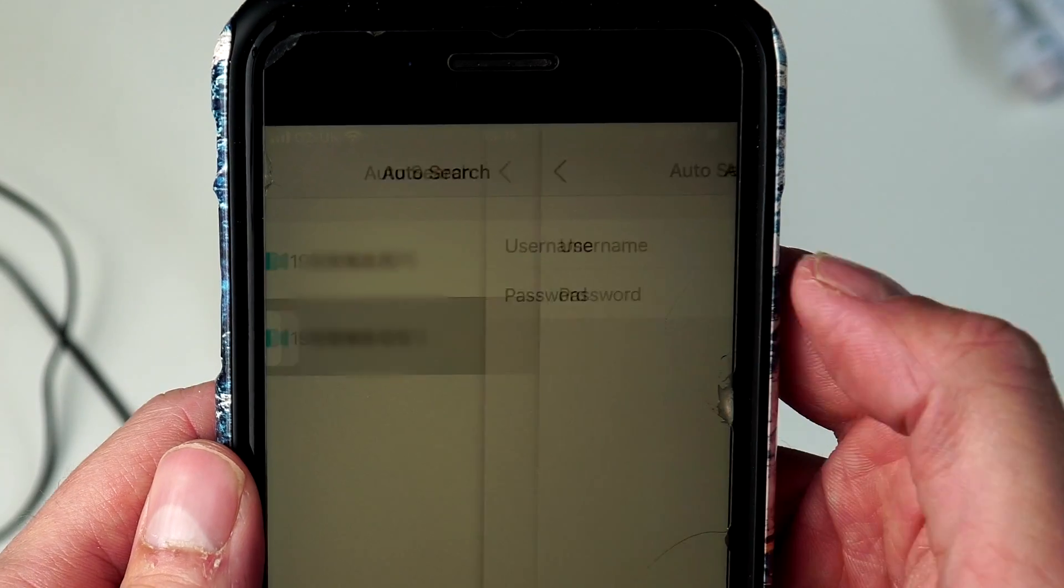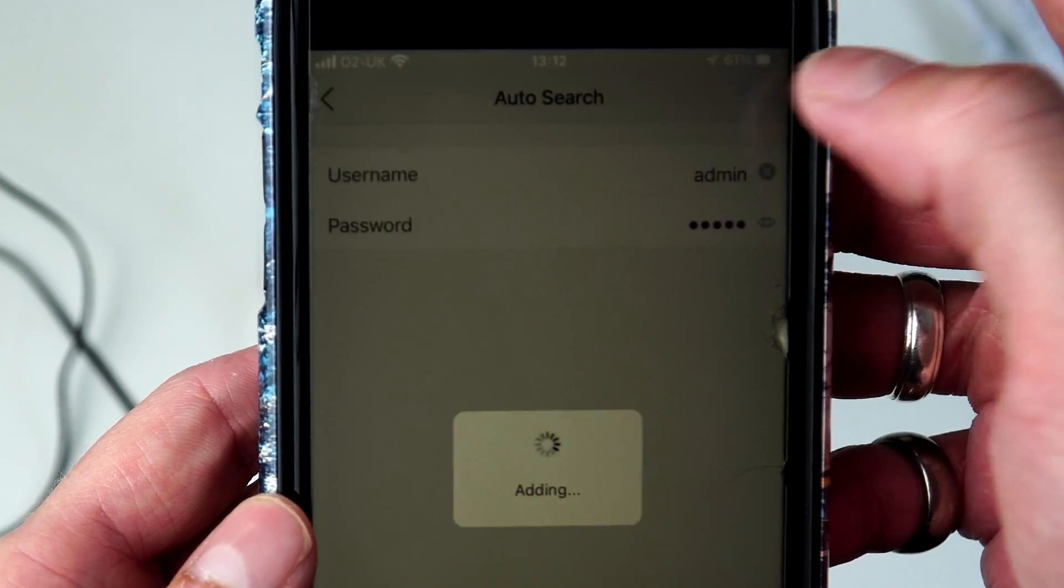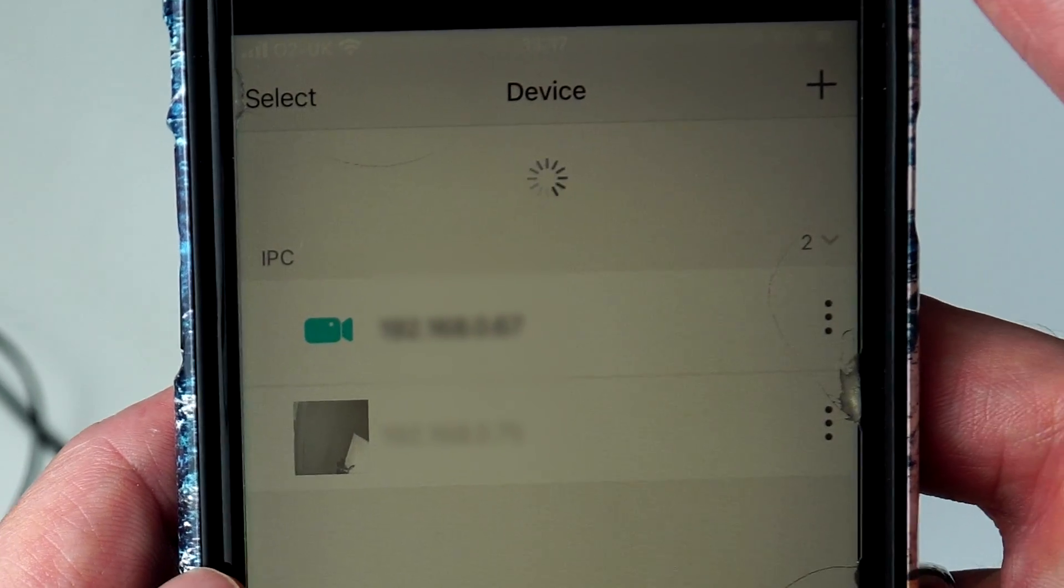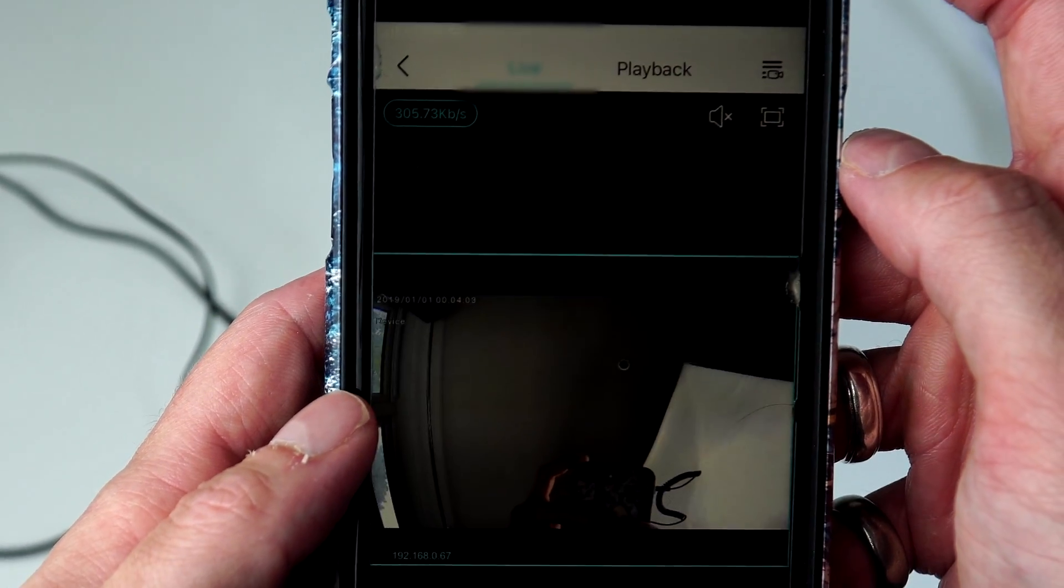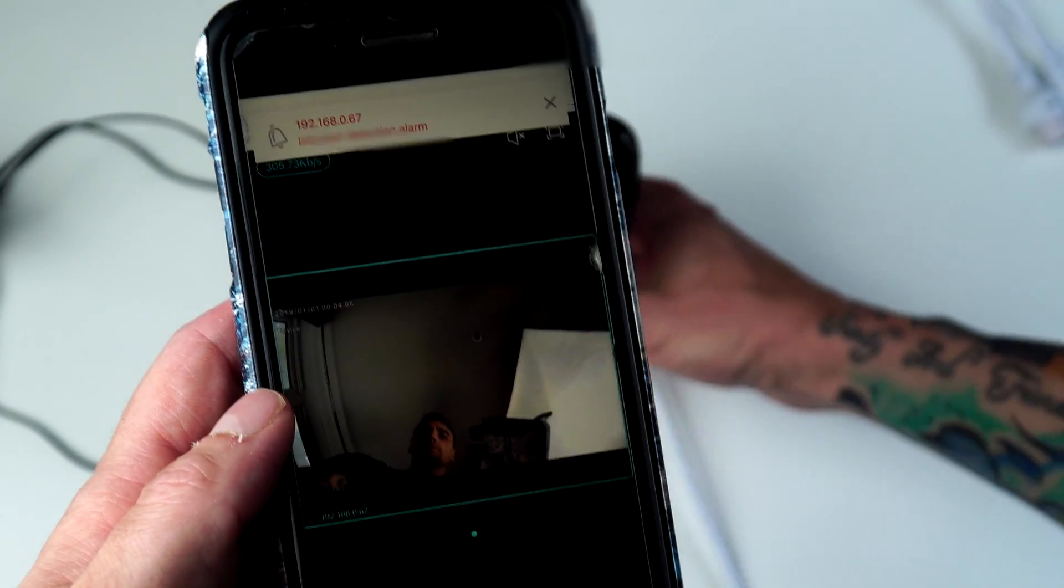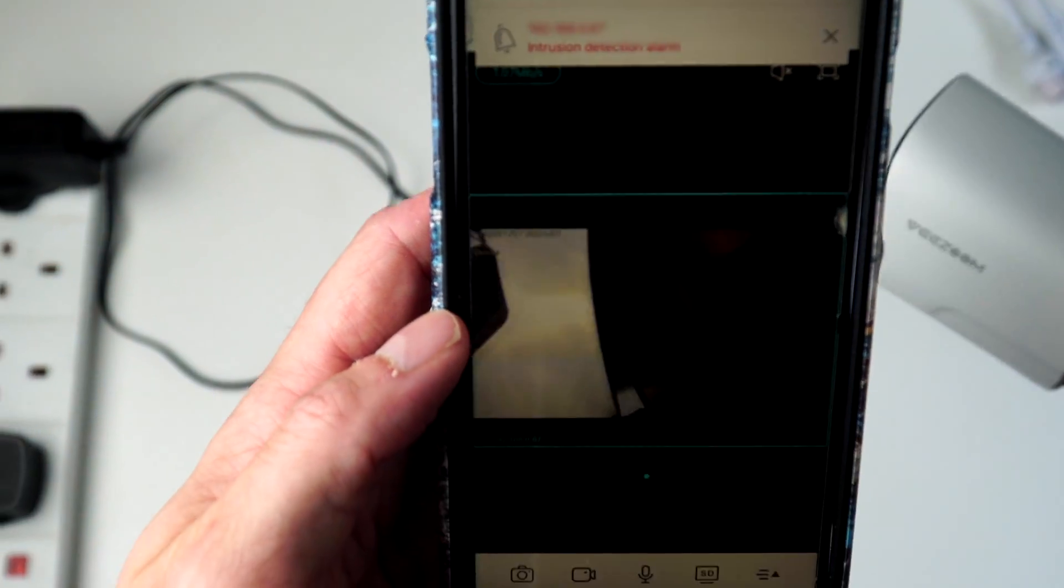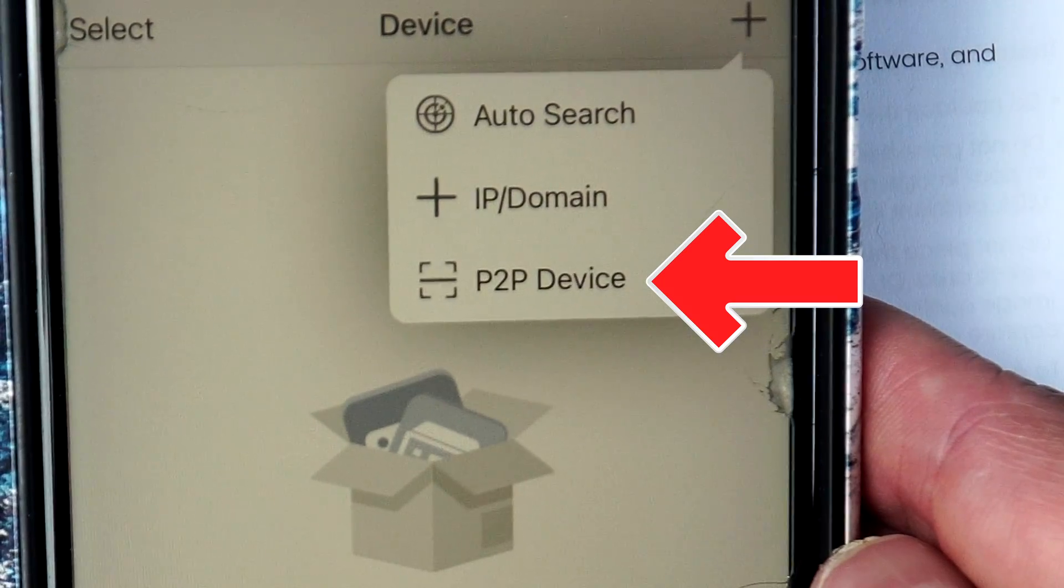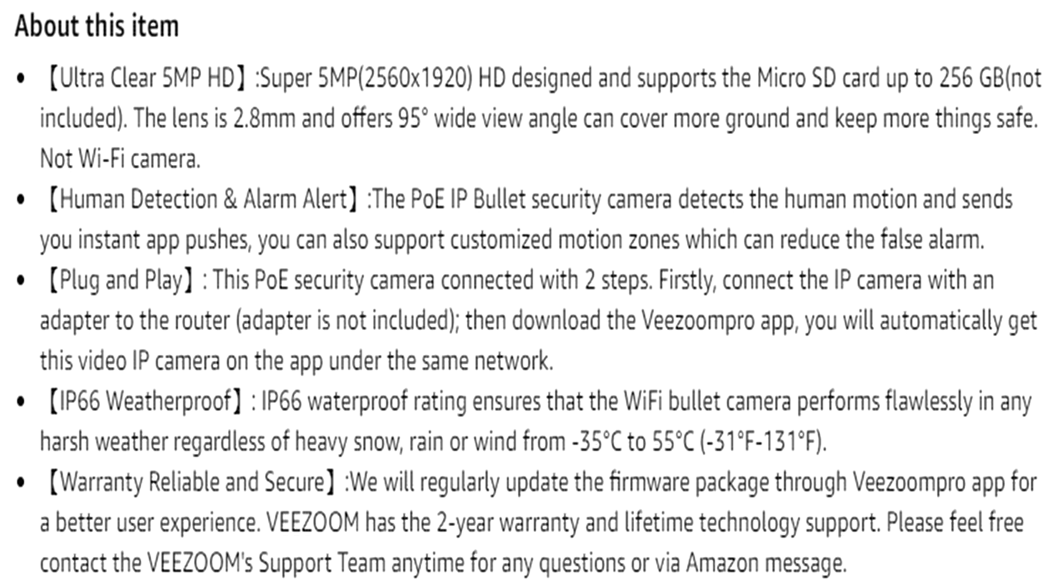Now if you went on auto search, it would show you the camera as an IP address, but you don't want to pick this option, as it'll only let you see the cameras when you're connected to the Wi-Fi in your house. So make sure when setting up, you connect to the P2P device option out of the three.